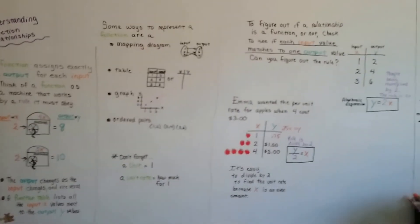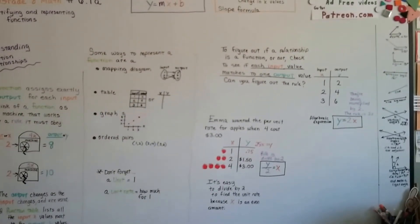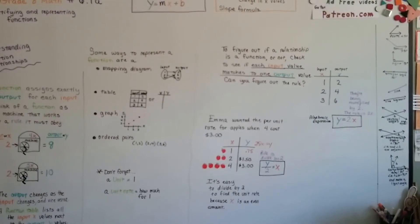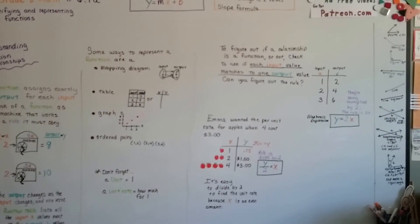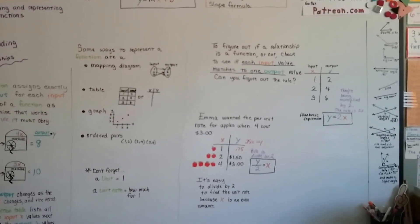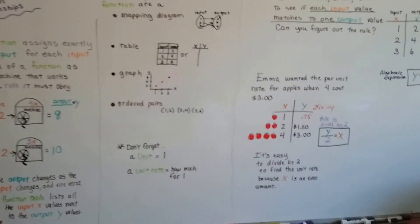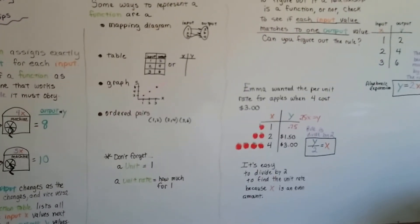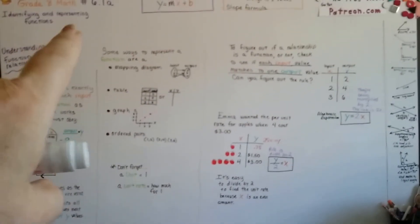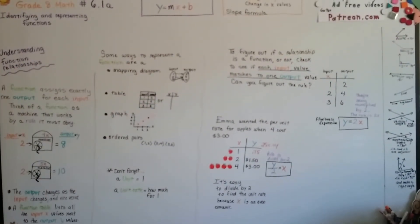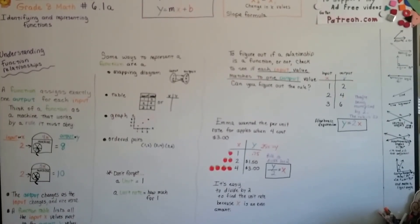This entire chapter, chapter 6, is all going to be about functions. By the time we're done, and there's going to be about 12 videos or so, you are going to completely understand functions. We're going to continue on, and we're going to talk about functions in these different forms. So we're going to go on to 6.1b, and we're going to continue talking about them. I'll see you next video. Bye.